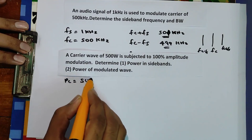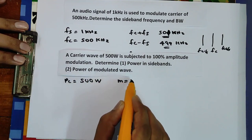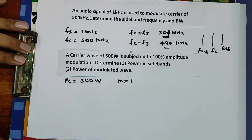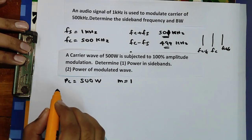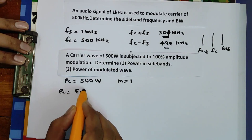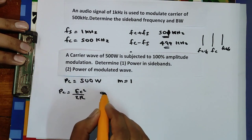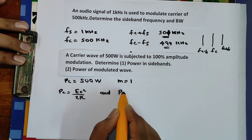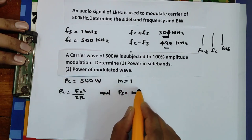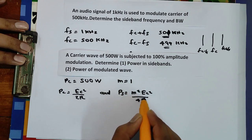Pc is given as 500 watts, and it is subjected to 100% modulation, that is m = 1. The power in the sideband is given by the formula Ps = m²Ec²/4R.